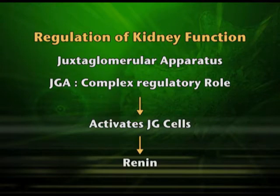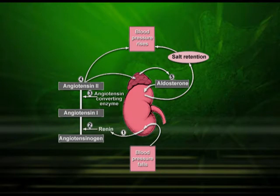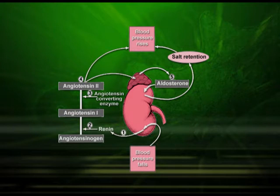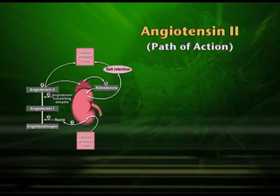The juxtaglomerular apparatus plays a complex regulatory role. Whenever there is an alteration in blood pressure, it is detected by JG cells because they are very close to the afferent arteriole of the kidney. Once they receive that signal, they secrete a hormone called renin. Renin converts angiotensinogen in the body to angiotensin 1 and then to angiotensin 2, and angiotensin 2 has a definite path of action.